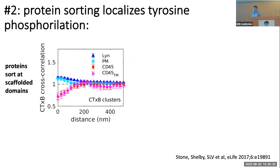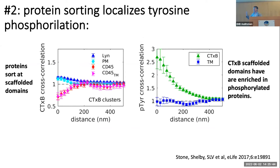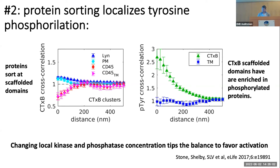These proteins sorted with respect to cholera toxin clusters are kinases and phosphatases. These cholera toxin domains are enriched in the kinase and depleted of the phosphatase. We can do a total tyrosine phosphorylation stain and show that within these clusters, we see a big uptick in tyrosine phosphorylation. Simply by aggregating cholera toxin in this very artificial way on the surface of these cells, we've created a little hotspot for tyrosine phosphorylation in the membrane.